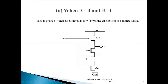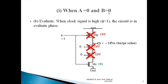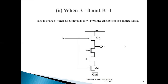Case 2: when A=0 and B=1, according to the NAND gate truth table the output should again be equal to 1. The pre-charge phase is common for all cases — when clock is 0, the pre-charge MOSFET is on and the evaluate MOSFET is off, so the output is pre-charged to logic 1.